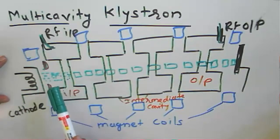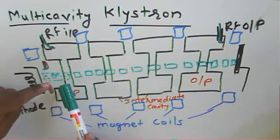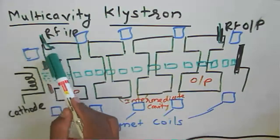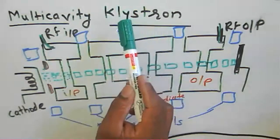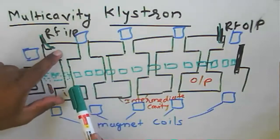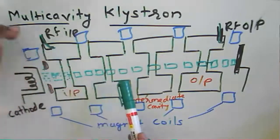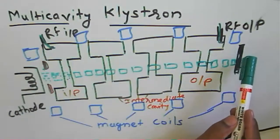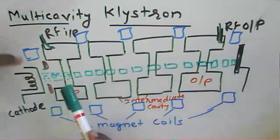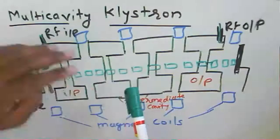The cathode emits electrons. Focusing anodes and focusing magnets focus the electron beam. The electrons propagate through the input cavity, which is the buncher cavity. An RF input is provided to this buncher cavity. The role of the klystron here is amplification. Based on the RF input, velocity modulation takes place, electrons form bunches, and the bunches propagate toward the collector.